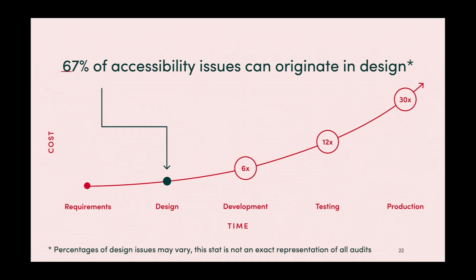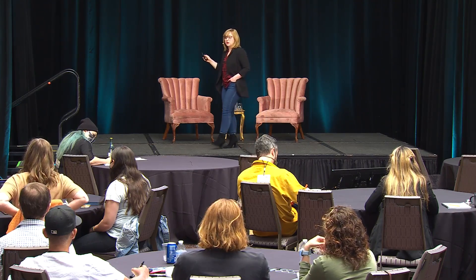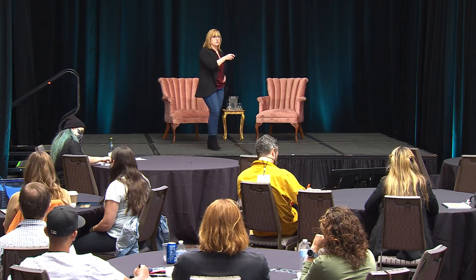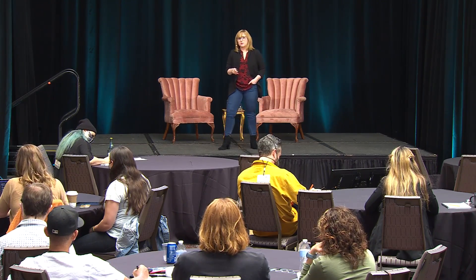67% of accessibility issues can originate in design — this is a case study from DQ that specifically references their work with U.S. Bank. The high-level takeaway is that we can't just have developers try to fix things by themselves: they can't fix color contrast, they can't rewrite the content. When we ignore accessibility in design, the cost amplifies like any bug — six times higher in development.